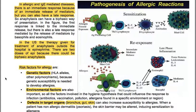Risk factors for allergies include genetic factors like HLA alleles and other polymorphisms, as genetic susceptibility is needed to develop allergies. Environmental factors are also important: factors involved in the hygiene hypothesis that could influence the response to infection — antibiotics, vaccination, pollution, and regional allergens. There are also defects in target organs like the bronchus, gut and skin, which can increase susceptibility to allergies.